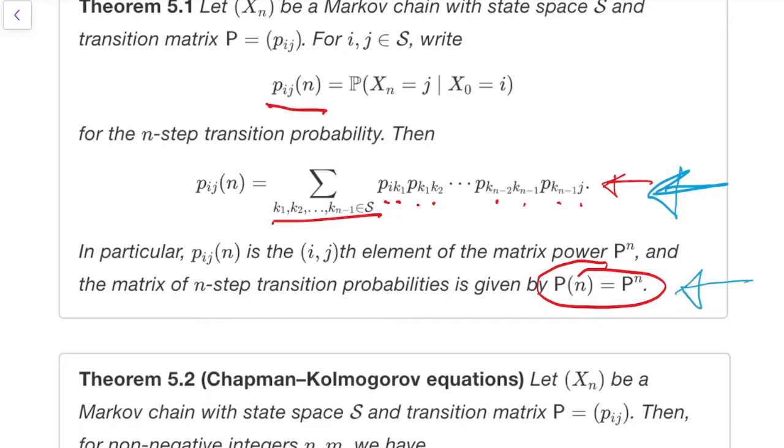Obviously that's a bit of a faff to do by hand, but a computer could do that in the tiniest fraction of a second. If you wanted your computer to find you all the 27-step transition probabilities, you could just tell the computer, do the matrix multiplication P times itself 27 times, and it would do it.